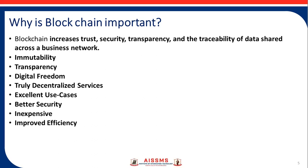Next is inexpensive — blockchain is inexpensive when compared to other technology. The removal of centralized authority removes the buffer required to run the network optimally. Next is improved efficiency, which is another reason why blockchain is important. Better security, removal of intermediaries, and overall better processes contribute to this. Transactions also take seconds rather than weeks to complete, especially international transactions.